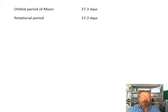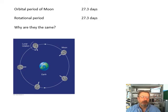Now, the orbital period of the Moon - how long it takes the Moon to orbit the Earth - is 27.3 days, and the rotational period of the Moon - how long it takes the Moon to spin - is 27.3 days. Notice they are the same.